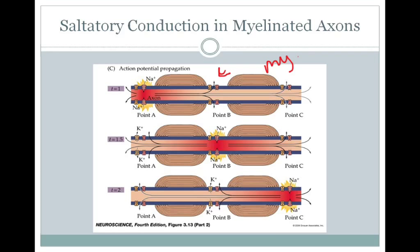Once the action potential has been generated at the first node, the current will spread through the axoplasm until it hits the next node, where it can bring that patch of membrane to threshold, cause an action potential, and so on.